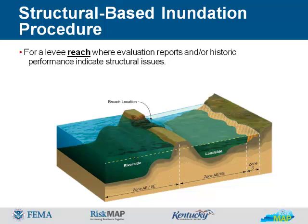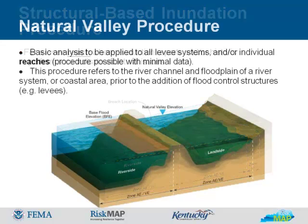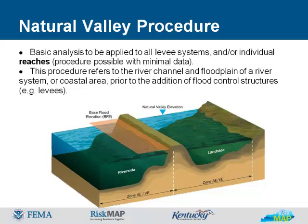Levy systems are potentially compromised by vegetation, burrowing animals, or fill materials known to be weak against hydrostatic pressures. The natural valley procedure is appropriate when the levy reach is so significantly overtopped that the existence of the levy does not have a noticeable effect on the water surface elevation, the level of risk is deemed low based on initial review of hazard potential classification and discussion with the community, no data to support the use of another procedure are available, or a community prefers to use this method. There are no data requirements for this procedure. The hydraulic significance of the levy is tested to see if it has an impact on the water surface elevation, with the breach modeled by leaving the levy in the model but allowing discharge to flow on either side.